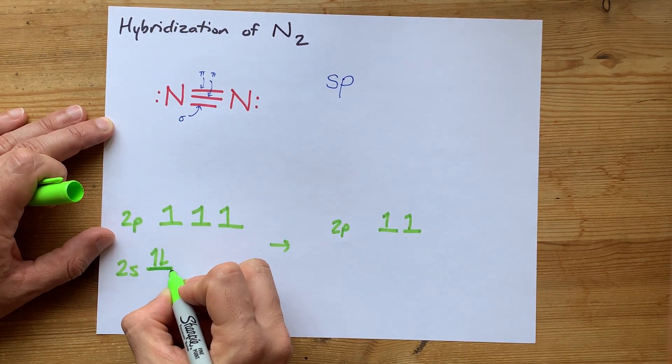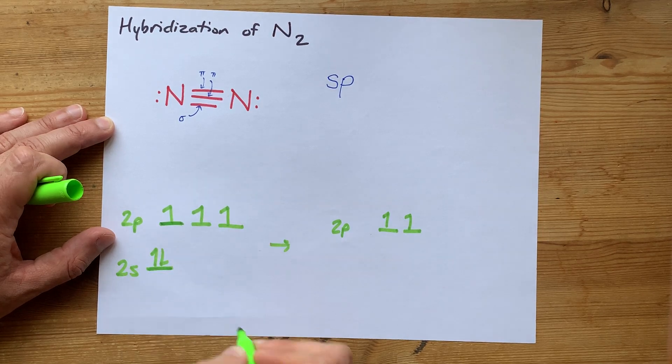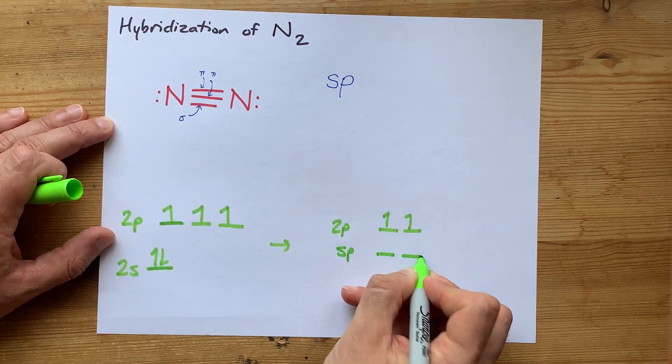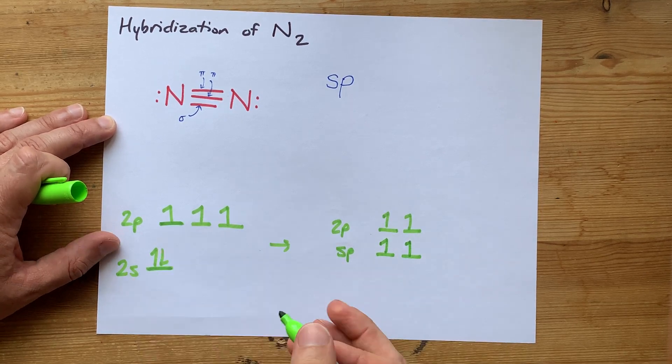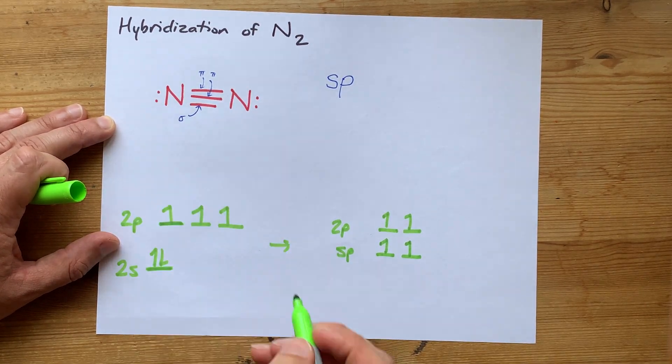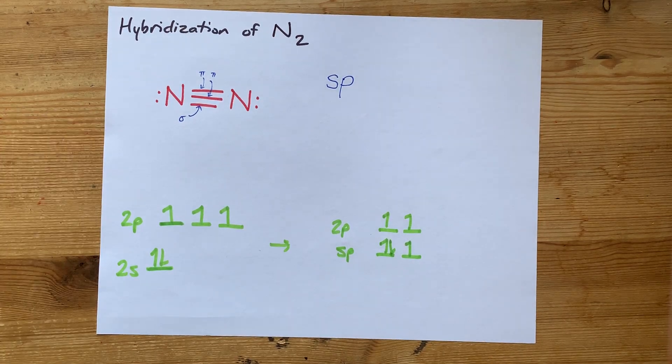This s and the other p here are what combine to make the hybridized orbitals. One, two, and there's a lone pair on each of these, so I'm going to put that extra electron there.